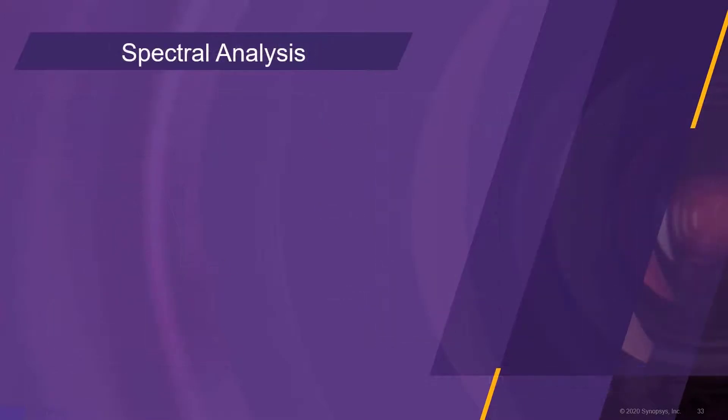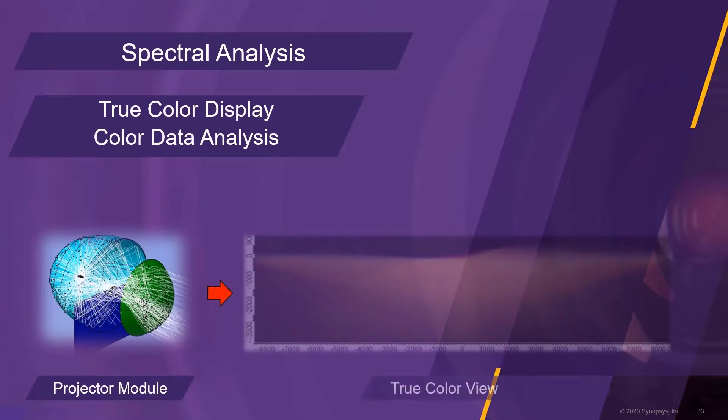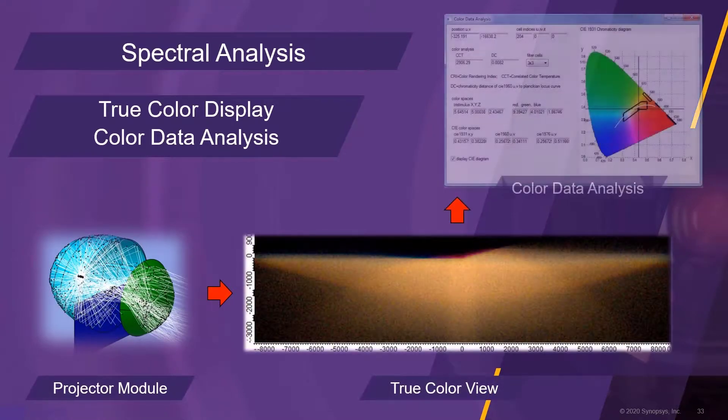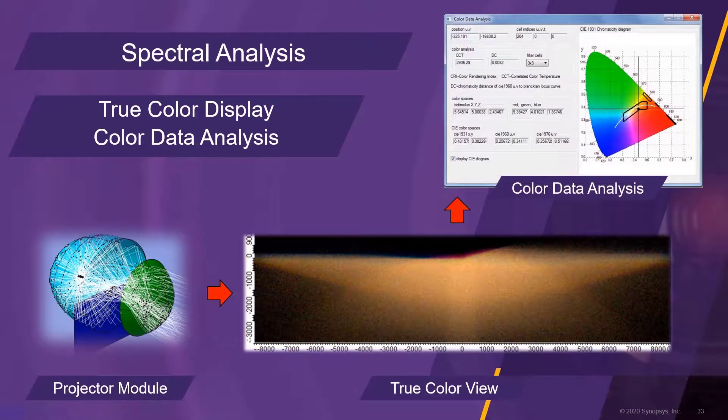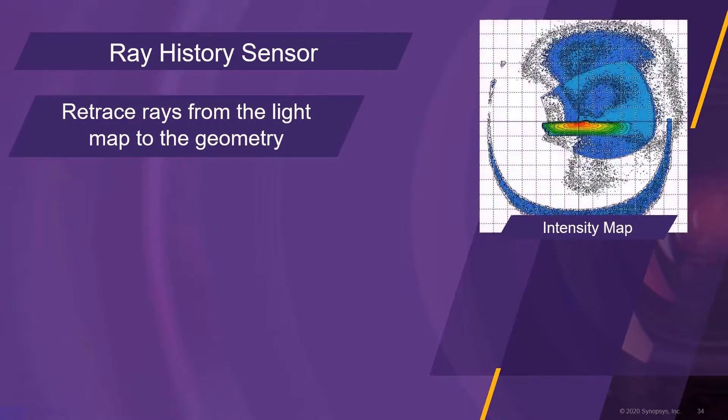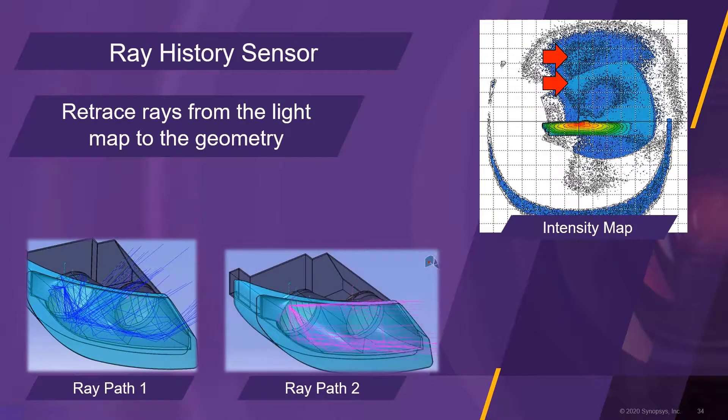For the spectral analysis, true color displays with a great variety of luminance tone mappers is available. Furthermore, a color data analysis tool will provide detailed color parameters for each pixel of an image. The ray-history sensor can trace rays from the light distribution map back to the source in the geometry. It is a great tool for the identification of stray light or hot spots.